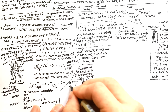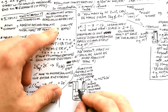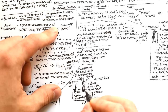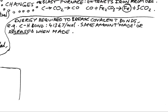Electrolysis can also be used to purify metals like copper. The impure copper is the anode (positive electrode). Copper atoms lose electrons to become Cu²⁺ ions, which move through the copper sulfate electrolyte to the cathode where they're reduced back to copper metal. The impure copper anode decreases in size while the cathode grows. Impurities in the copper aren't soluble so they just drop to the bottom, leaving pure copper on the cathode.